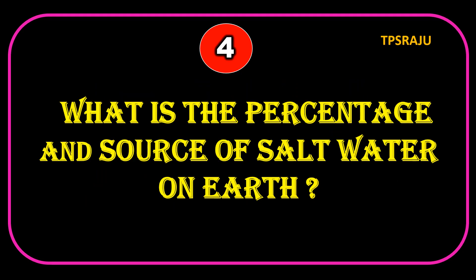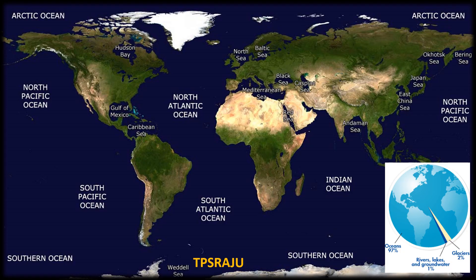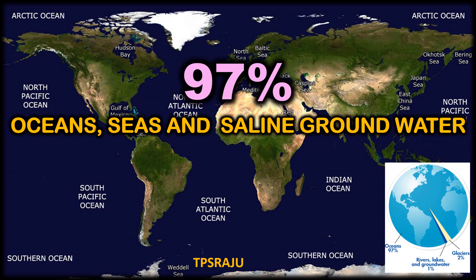What is the percentage and source of salt water on Earth? 97% — oceans, seas and saline groundwater are the sources of salt water.